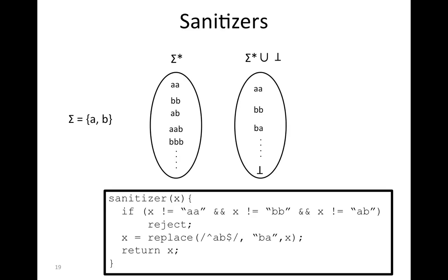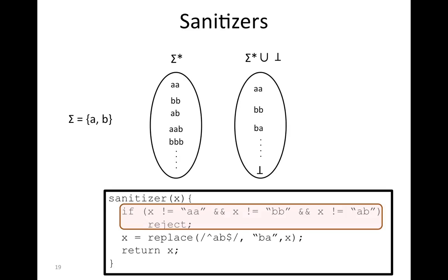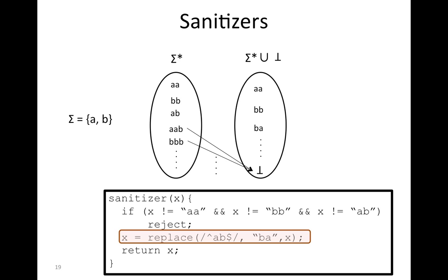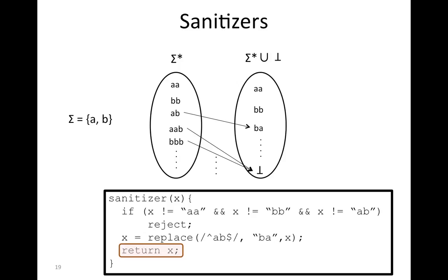Let's see how the function works. First, the function validates the input using a filtering operation. If the input is not one of these three strings — A, AB, or BA — it's going to reject it and map it to bottom. If the input is one of these three strings, then we do a replace operation. If the input matches AB, we replace it with BA, mapping AB to BA. For the other two, A maps to A and B maps to B.